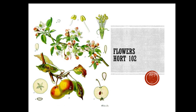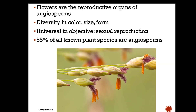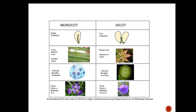This week we're talking about flowers. Flowers are the reproductive organs of angiosperms — angiosperms are flowering plants, very diverse in color, size, and form. They have one objective: sexual reproduction. Of all the plants identified on Earth, 88% are angiosperms. Here's our chart of monocots and dicots: with monocots, floral parts are in multiples of three, and with dicots, floral parts are multiples of four or five.